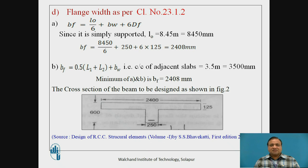Next is you are supposed to find out flange width as per clause number 23.1.2. Bf = L0/6 + Bw + 6Df. Since it is simply supported beam, L0 is the distance between two points of zero bending moment. For simply supported, zero bending moment is at support, therefore L0 equals 8.45. So Bf works out to be 2408 mm. Another thing we should check: Bf = 0.5L1 + L2 + Bw, which is the center to center distance between adjacent slabs, 3.5 meter. The minimum of A and B is to be taken as Bf.